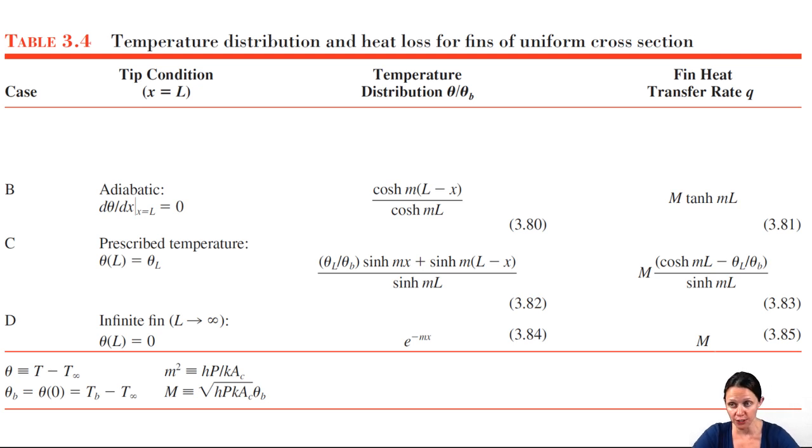If you have convection from the tip, if the fin is surrounded by the fluid, case B using a corrected length is perfectly acceptable. Your book states that you'll still obtain accurate results doing this as long as HT over K or in the case of a rectangular fin, HD over TK in the case of a pin fin is less than 0.0625.